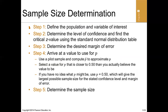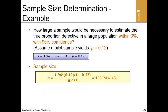The steps for determining sample size are: define the population and variable of interest; determine the level of confidence — 90%, 95%, or 99% — each corresponding to a specific z-value; determine the desired margin of error; arrive at a value for the population proportion, using the sample proportion if the population proportion is unknown; then calculate the sample size.